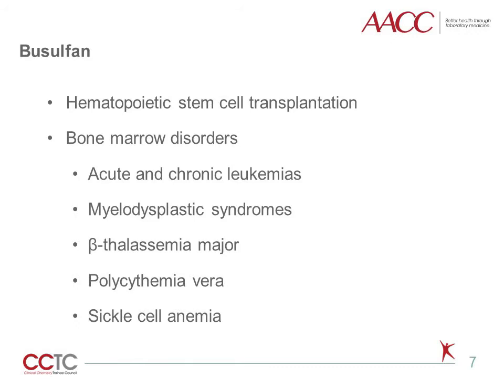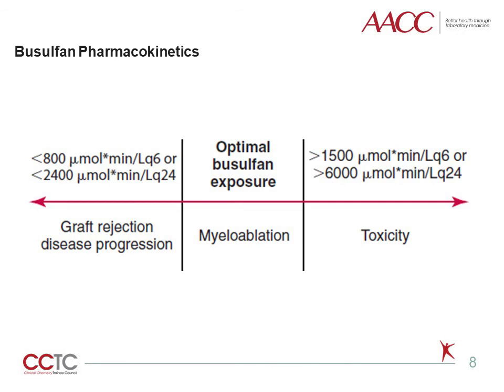Busulfan is a chemotherapeutic drug that inhibits the growth of malignant cells by alkylating DNA. Busulfan is currently used in hematopoietic stem cell transplant preparative regimens to maximize antitumor effect. In addition, Busulfan is also used to treat myeloid and non-myeloid bone marrow disorders such as acute and chronic leukemias, myelodysplastic syndrome, beta-thalassemia major, polycythemia vera, and sickle cell anemia. Busulfan pharmacokinetics is affected by age, weight, disease status, hepatic function, and drug interactions.